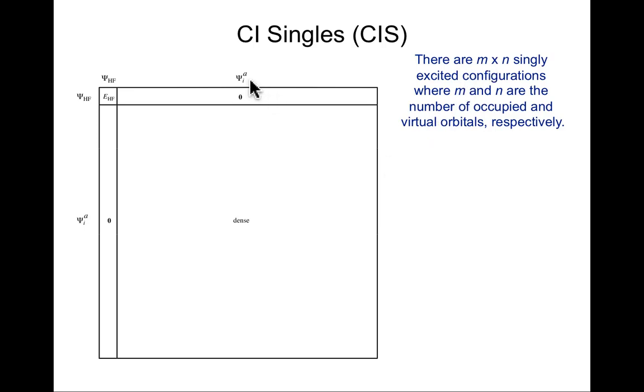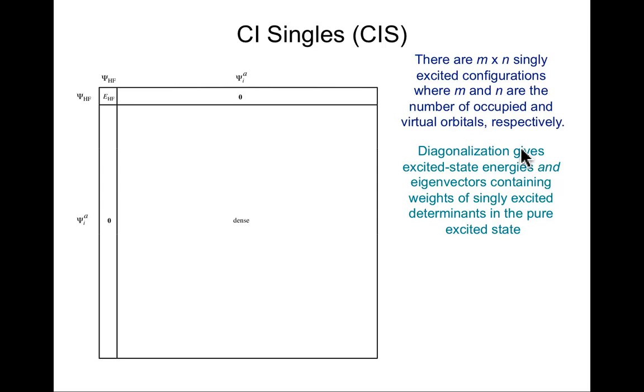How many of these excitations are there? There's M times N, where M and N are the number of occupied and virtual orbitals. There may be a spin symmetry reduction of that, but that's a good way to think about it.